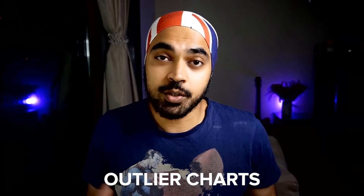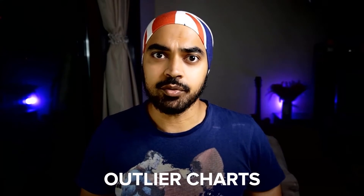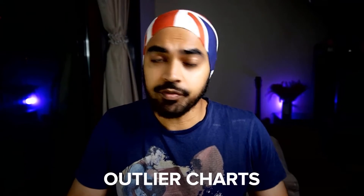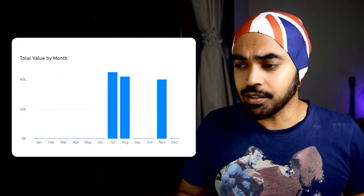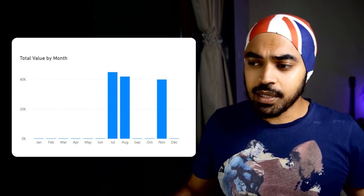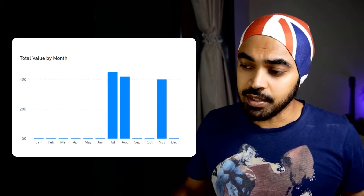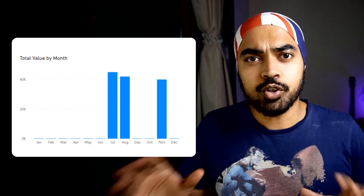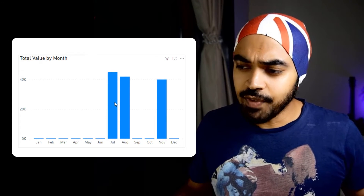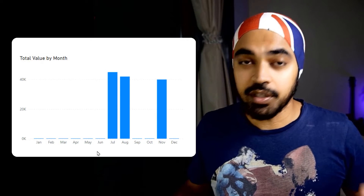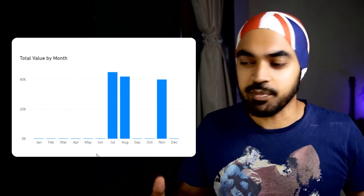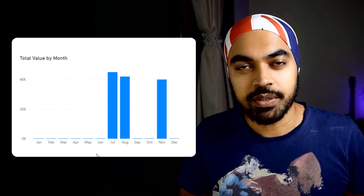Hello people, welcome back to the channel. It's pretty common to come across scenarios where you have charts with outlier or very large values, and if the other values of the chart are very small, you would get a chart something like this. Since the values from January to June and other months in between are so small, the large values are completely killing the small values and they are just not legible and not visible. Not really a good chart to read.